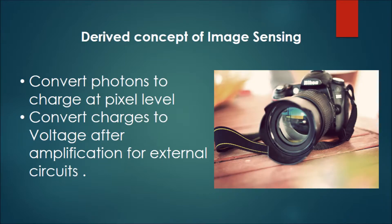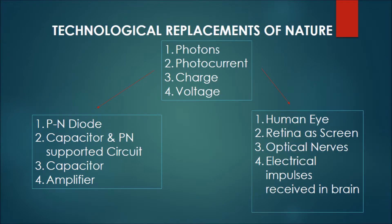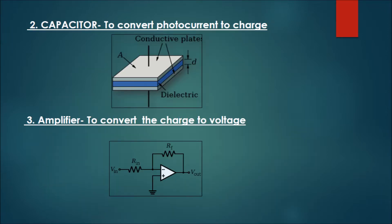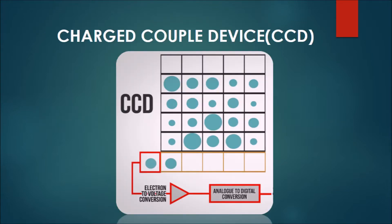This derived concept of image sensing from the natural eye is implemented in cameras, which basically convert photons to charge at pixel level and convert charges to voltage after amplification for external circuits. The basic construct of image sensing is photons, photocurrent, charge, and voltage — seen through both the parallels of nature and technology, where the replacements for nature are: a PN diode for the human eye, a capacitor in a PN-supported circuit for the retina, a capacitor as the optic nerve, and an amplifier for the electrical impulses received in the brain. The first step is to convert light energy to photocurrent via a photodiode, which is a PN junction operated in reverse bias. The second step is to convert photocurrent to charge via a capacitor, and the third step is to convert the charge to voltage via an amplifier.